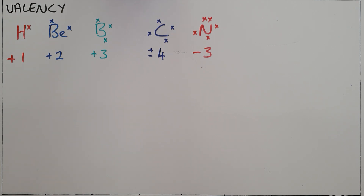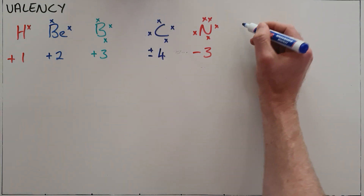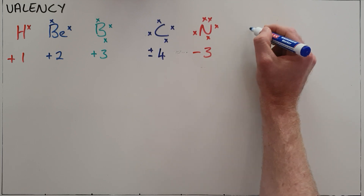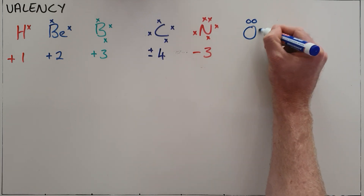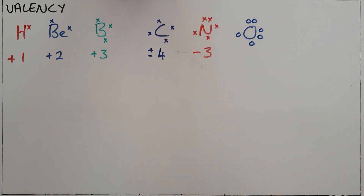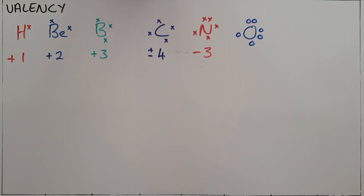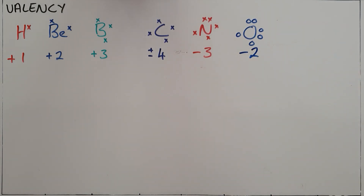We can then look at elements in group 16, or group six of the periodic table — for example, oxygen. We know that oxygen has six valence electrons and therefore only needs two more electrons in order to have a full valence shell. This means that if it gains two electrons, it gains a charge of negative two and therefore has a valency of negative two.